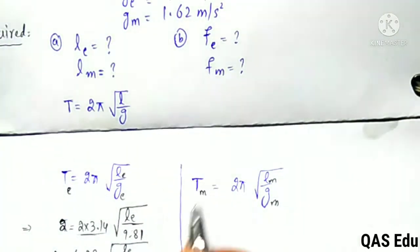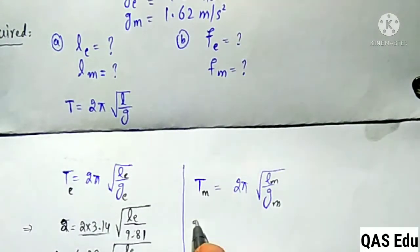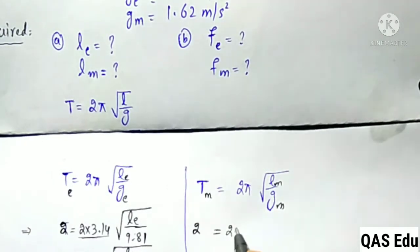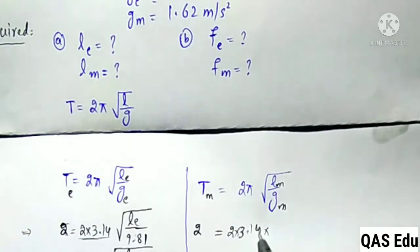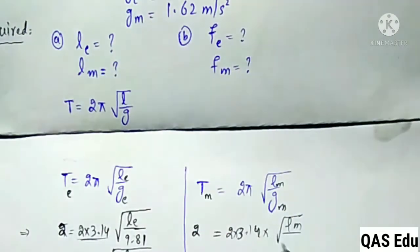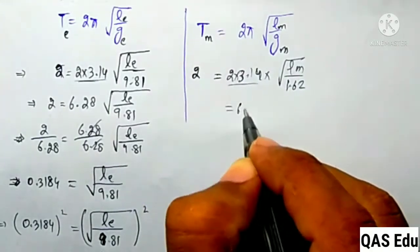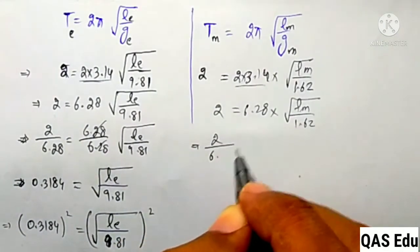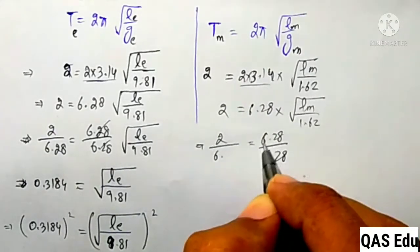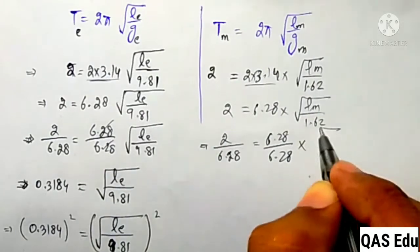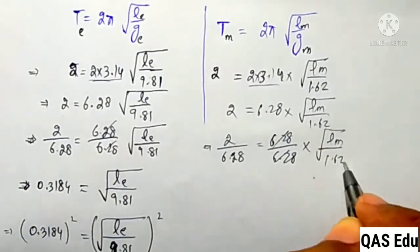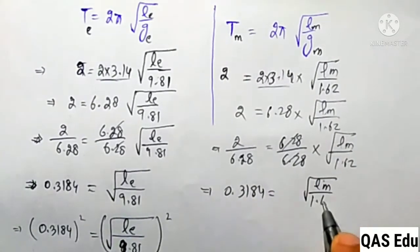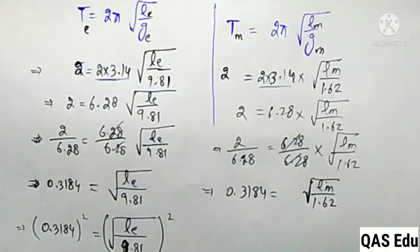Length on the Moon: The time period is 2.0 seconds. On the Moon, 2.0 = 2π√(Lm/1.62). Dividing both sides by 6.28: 0.3184 = √(Lm/1.62). Taking the square of both sides to eliminate the square root.